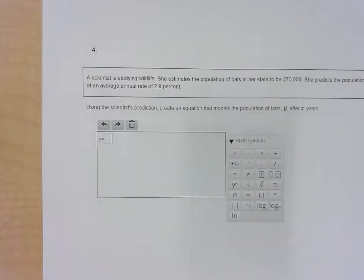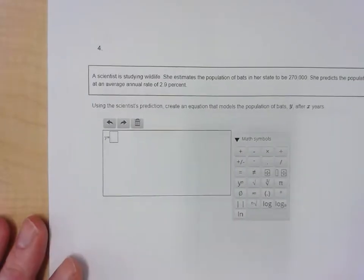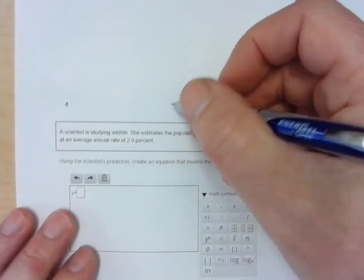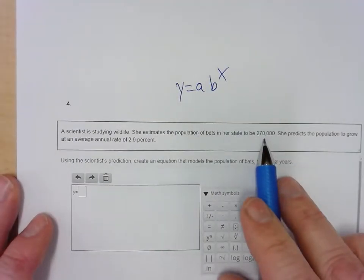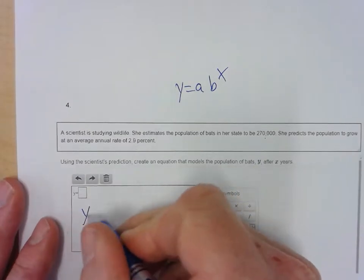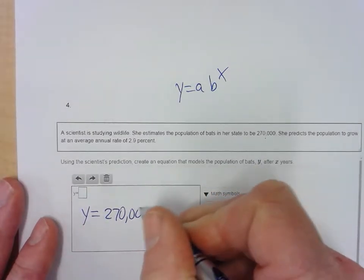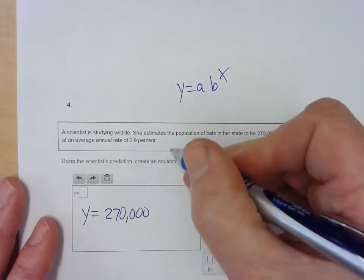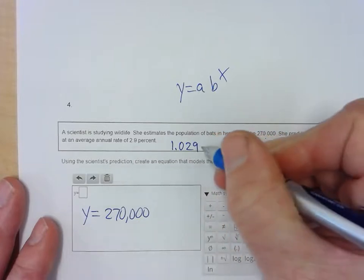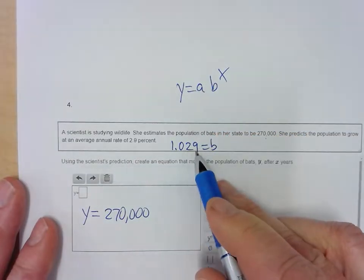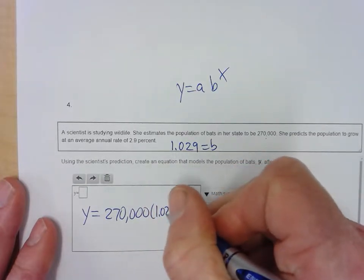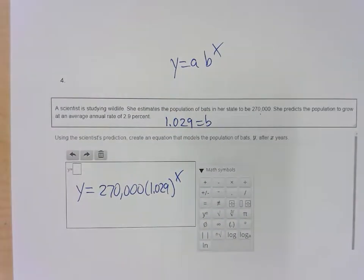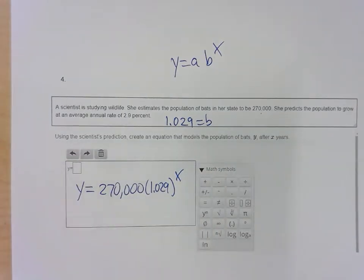Question 4: This is exponential growth. We use the formula y equals A times B to the x. It says we have a population of 270,000 bats and a 2.9% growth rate. So B is 1.029 — that's almost 3 pennies more added to the dollar. So it's y equals 270,000 times 1.029 to the x power. That equation models this situation.